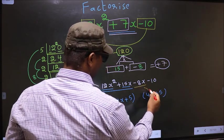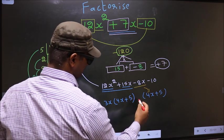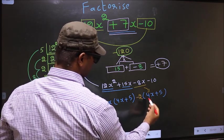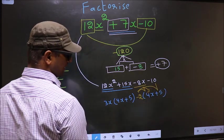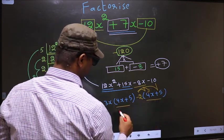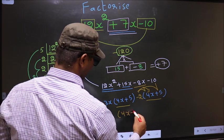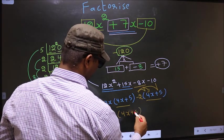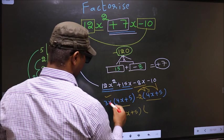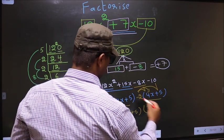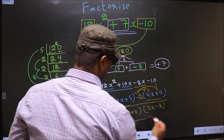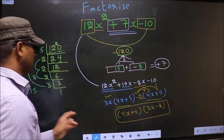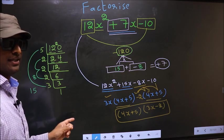From this, 4x has gone inside. So outside you get minus 2. Even if you multiply and see, you still get the same thing. Now you take out 4x plus 5 common. So here we have 3x and here we have minus 2. So this is our answer.